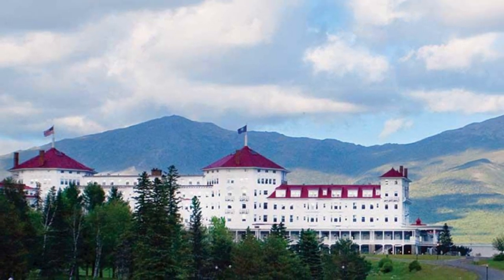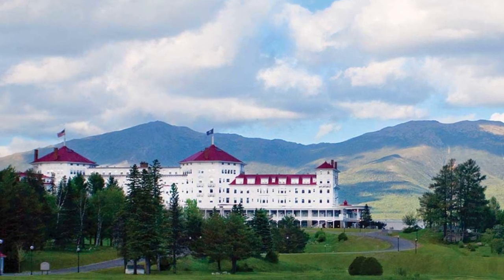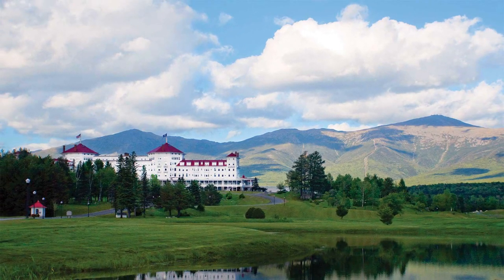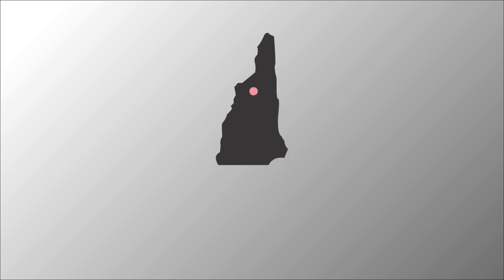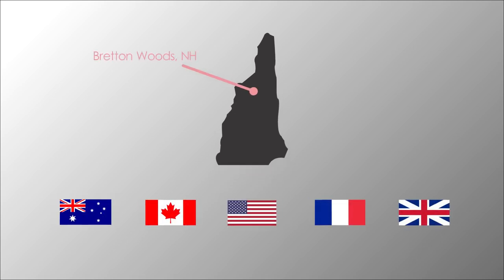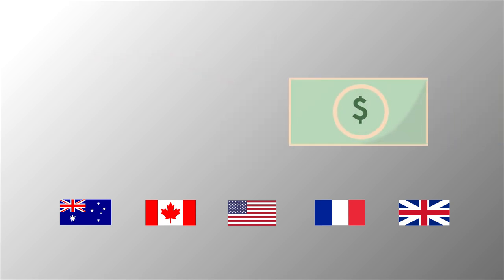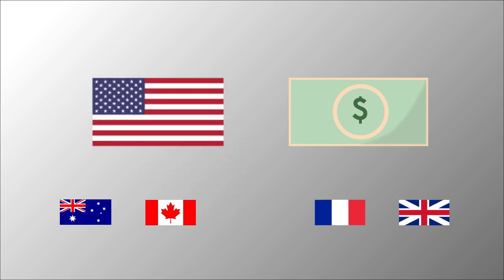The Bretton Woods Agreement was introduced at the conclusion of World War II in Bretton Woods, New Hampshire. The conference took place over three weeks in the summer of 1944, between the allied nations from the war. At the end of the deliberations, the US dollar replaced the gold standard as the global currency, essentially making the United States the most powerful country in the world.